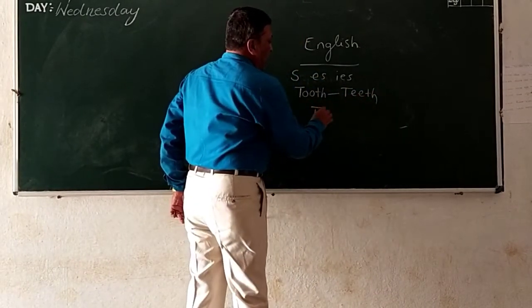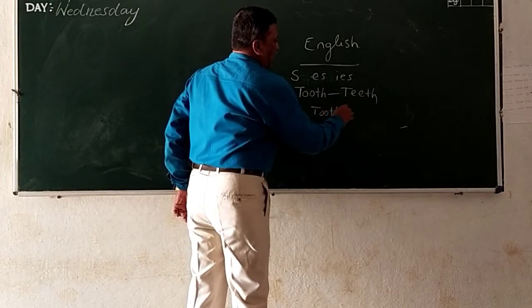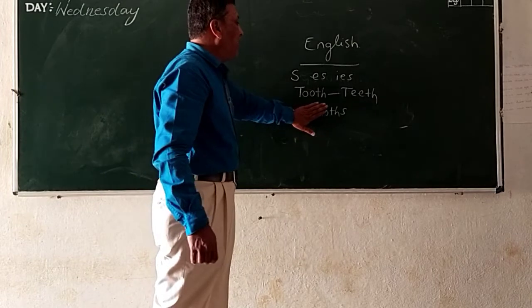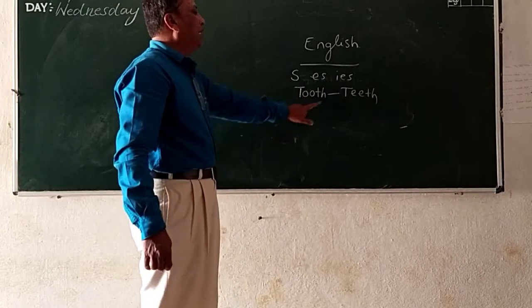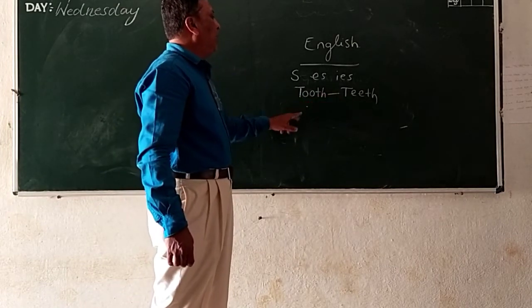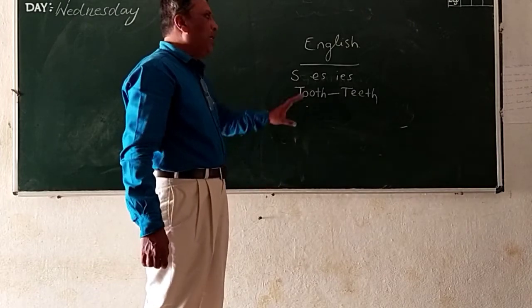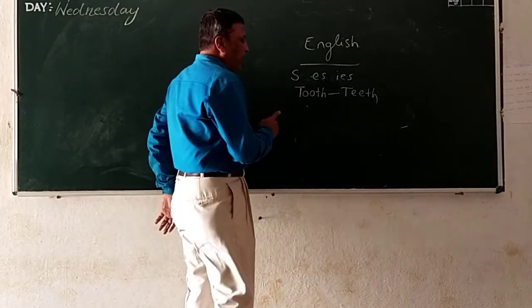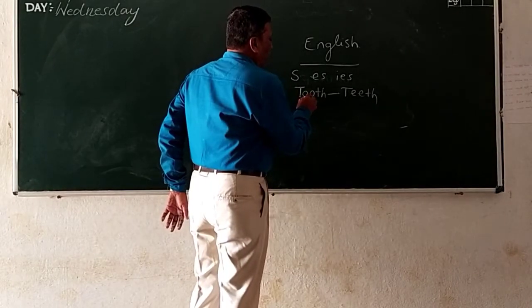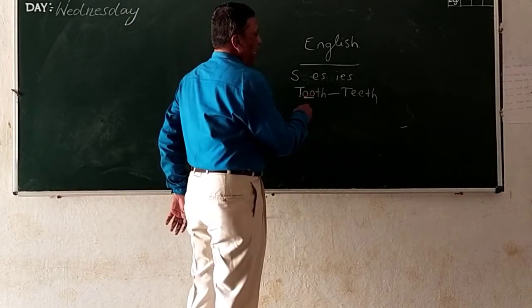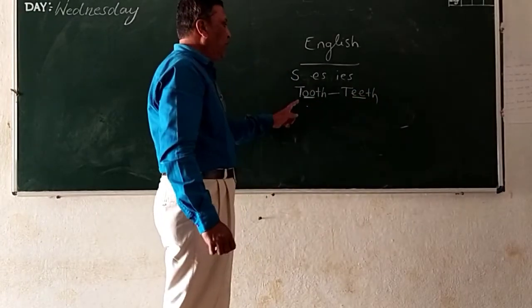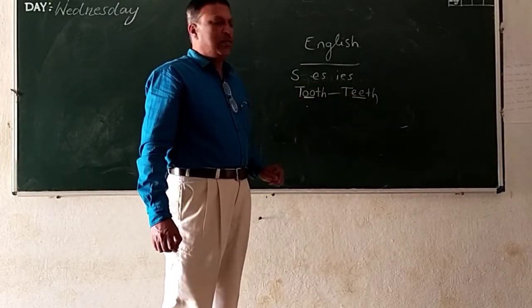T-O-O-T-H-S? No, it's not tooth. No, it's teeth. Why sir? The rule is like that. What is the rule? If O-O appears here, we have to put double-E. So tooth, tooth.